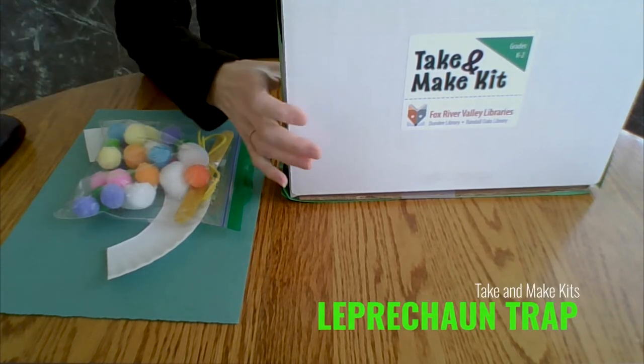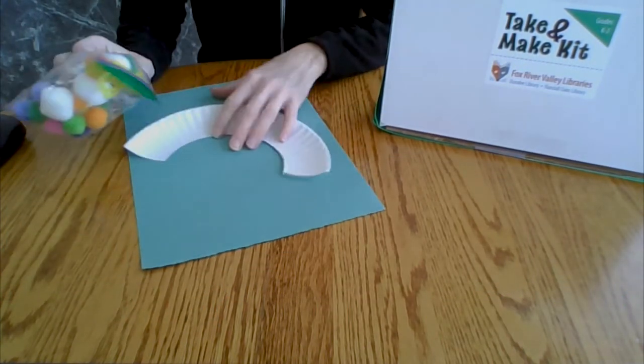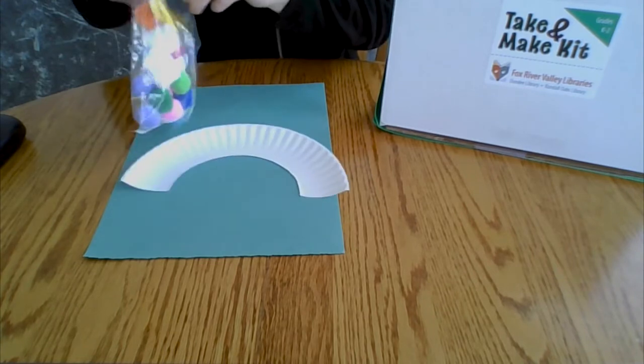So inside the box you're going to find some green paper, a cut paper plate, and a bag of supplies.